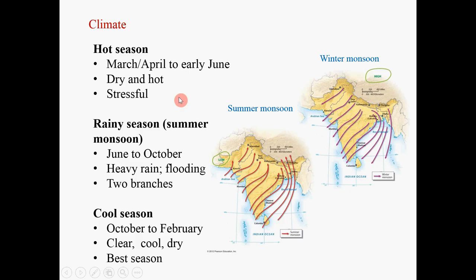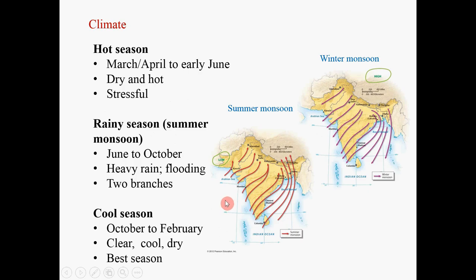Then the rainy season comes — the summer monsoon from June to October. The monsoon rain comes with monsoon wind, which hits the land in two branches: one branch hits the west coast, and another hits the Bay of Bengal area and the Ganges Delta region. When the rain comes, it is life-giving rain and everything comes back to life. People celebrate and dance and sing in the rain. But monsoon rains can also cause problems, because flooding can destroy property, land, and even cost lives.